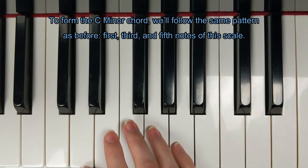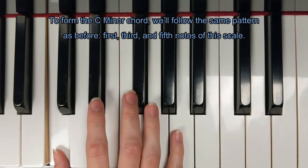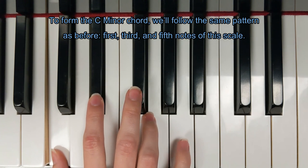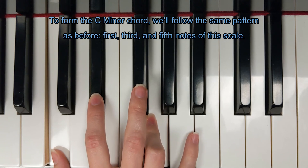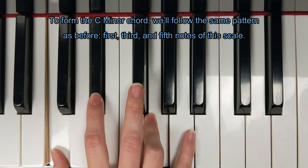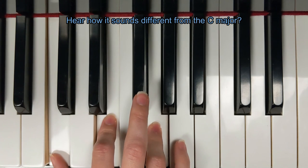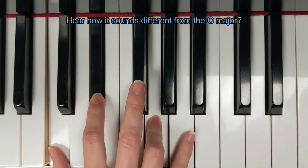To form the C minor chord, we'll follow the same pattern as before. 1st, 3rd, and 5th notes of this scale. Hear how it sounds different from the C major? It's creepier.